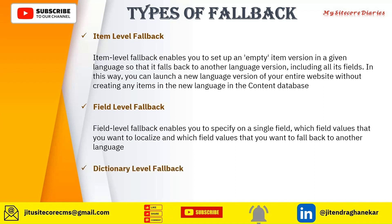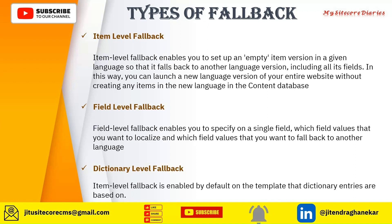Those are the two basic types of fallback, but the dictionary also has a fallback that uses item level fallback by default. So if you create a dictionary for 'en' but not for 'en-IN', and the fallback is set up, then all the content from 'en' will be displayed for 'en-IN'. That is how dictionary level fallback works.